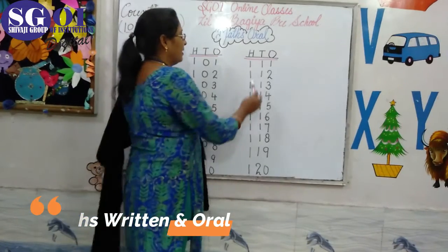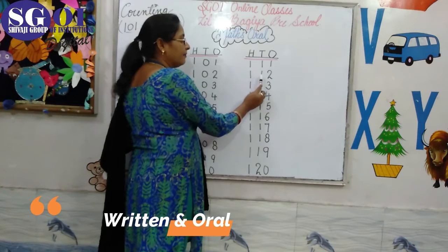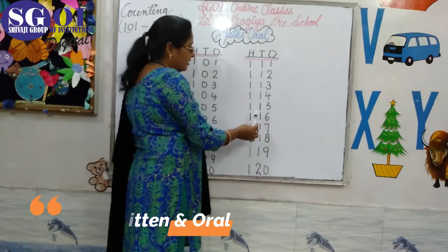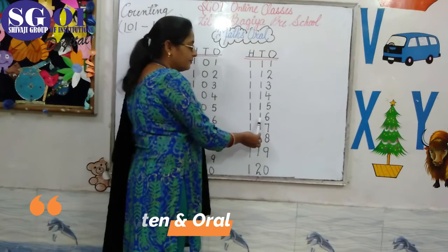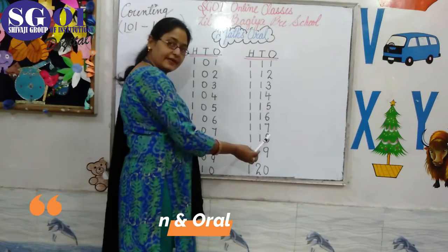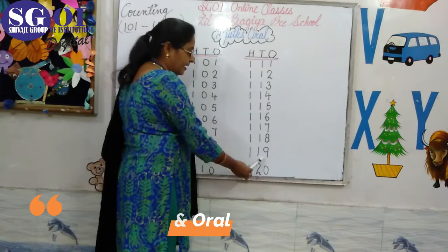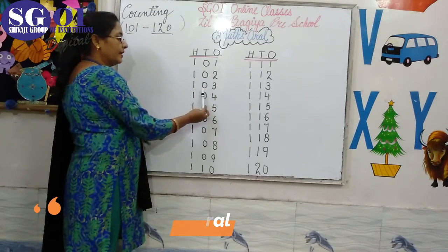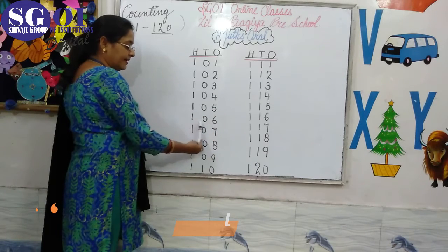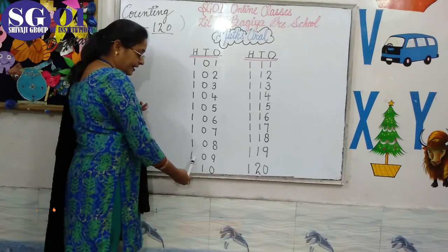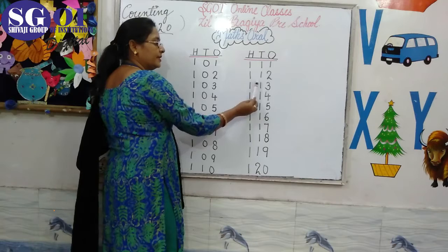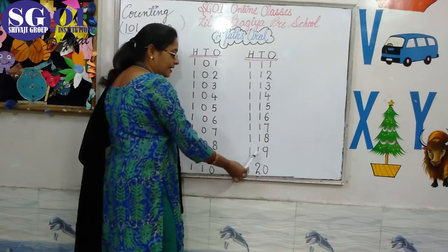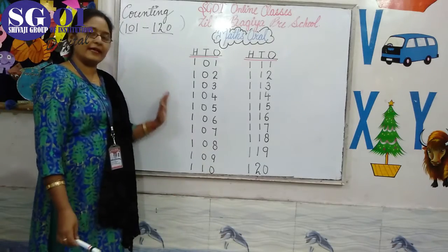Now the next slide: one hundred eleven, one hundred twelve, one hundred thirteen, one hundred fourteen, one hundred fifteen, one hundred sixteen, one hundred seventeen, one hundred eighteen, one hundred nineteen, one hundred twenty. Let's repeat: 101, 102, 103, 104, 105, 106, 107, 108, 109, 110, 111, 112, 113, 114, 115, 116, 117, 118, 119, 120. Kids, you have to learn it like this. Thank you.